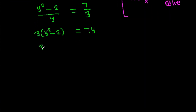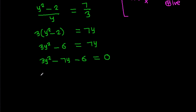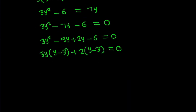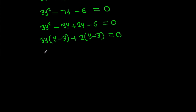Cross-multiplying gives 3(y² - 2) = 7y, which expands to 3y² - 6 = 7y, so 3y² - 7y - 6 = 0. Splitting the middle term: 3y² - 9y + 2y - 6 = 0.